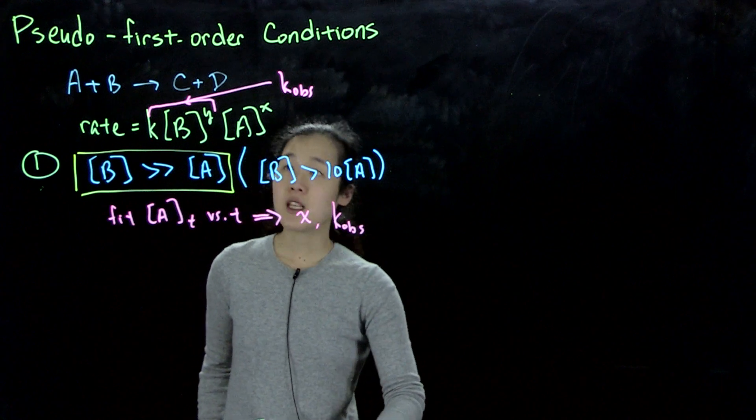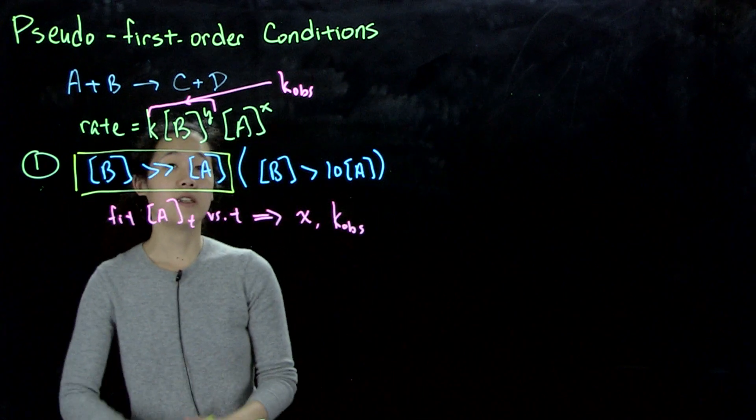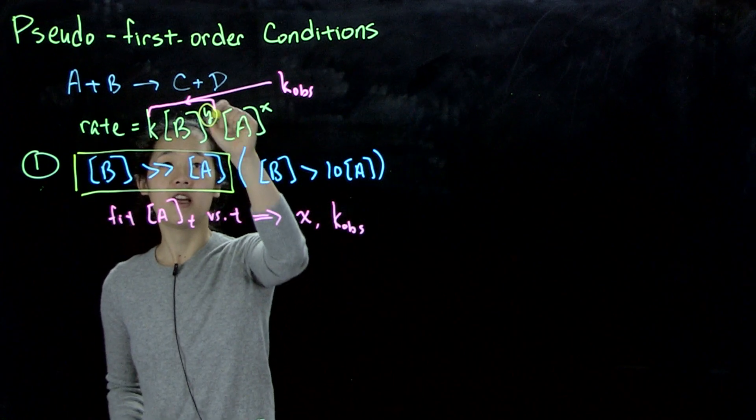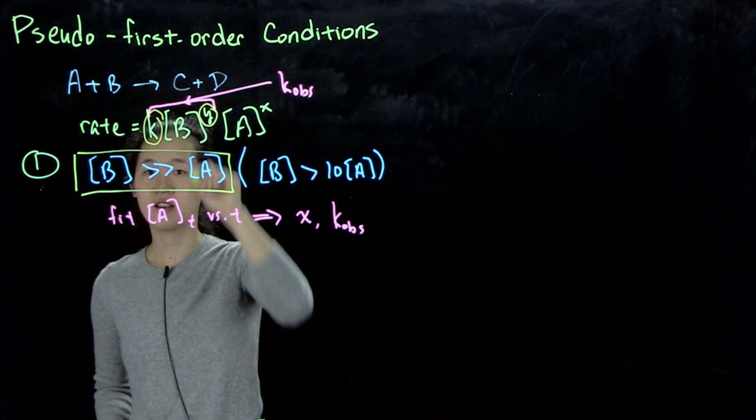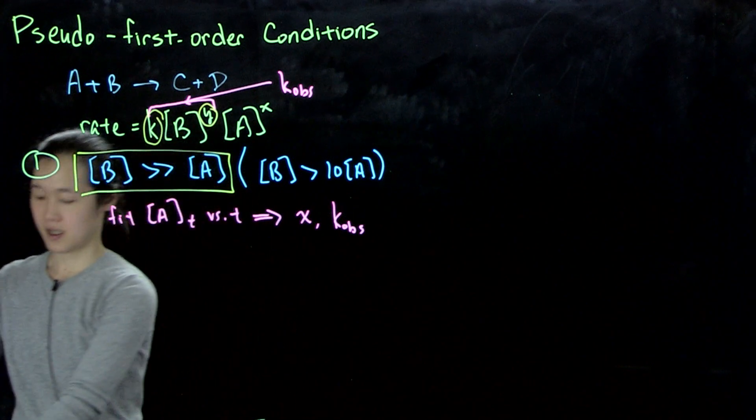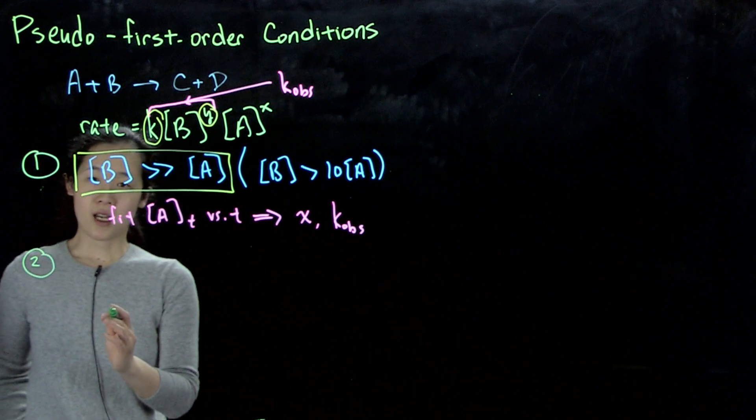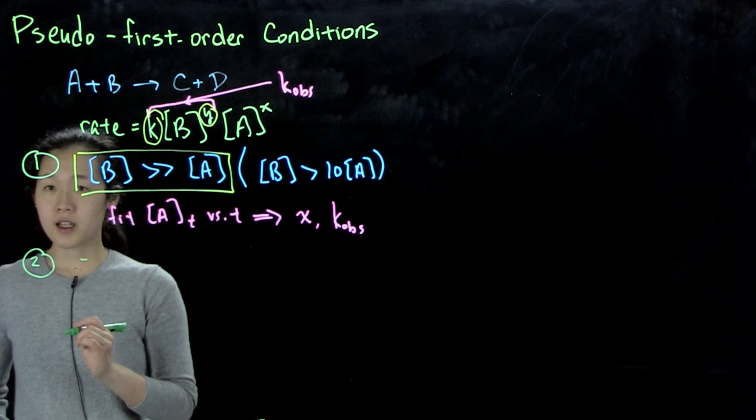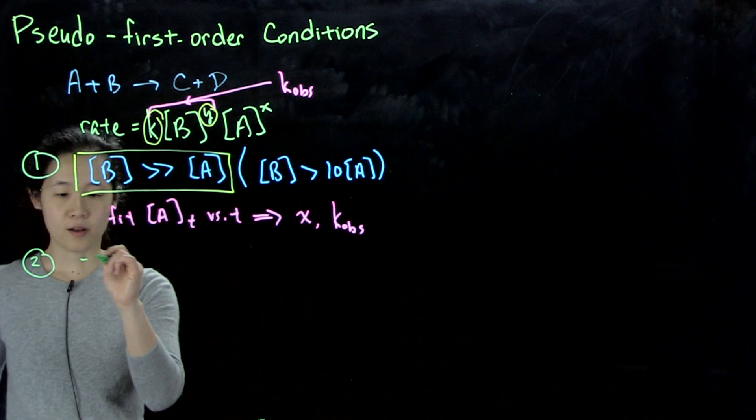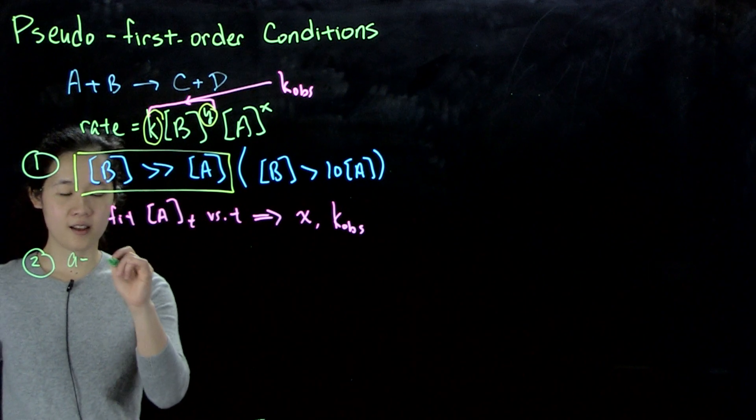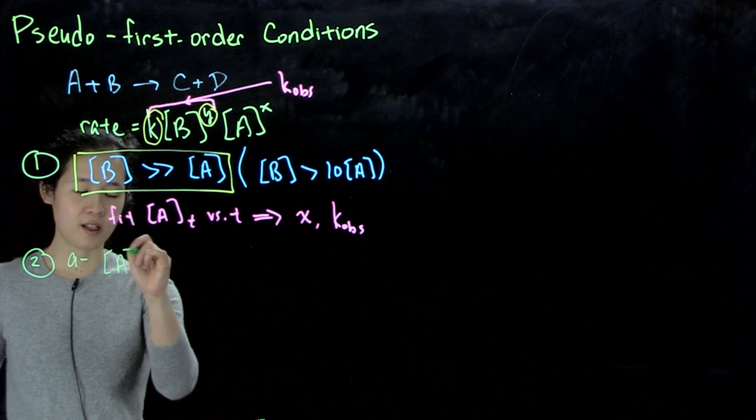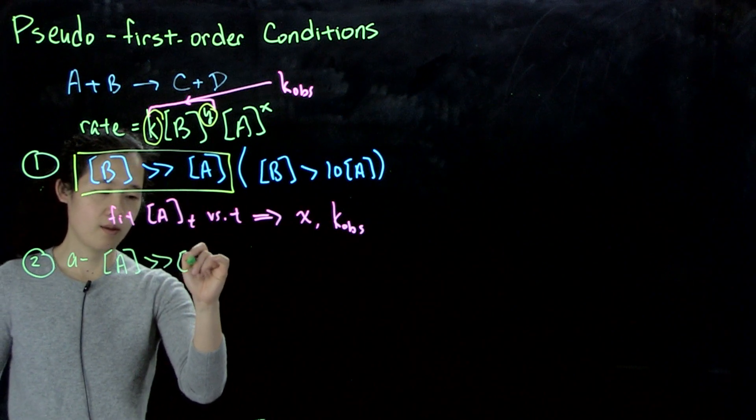So for the second step, now we need to find y, as well as the actual k. So for the second step, step two. You have two possibilities now. You could again run it under pseudo-first-order conditions, but this time reverse it. So possibility one, or possibility A, do run the reaction with A greater than B.